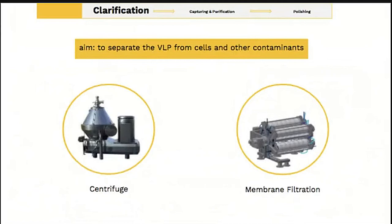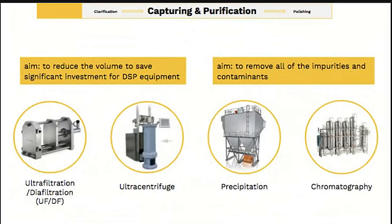The goal of capturing and purification is to reduce the volume, remove impurities for further purification steps, and save significant investment required for the DSP equipment. Capturing can be done through UFDF or ultracentrifugation. However, UFDF is more commonly used in the industry due to scalability issues with ultracentrifugation. While ultracentrifugation gives a higher volumetric concentration factor, it is very costly to scale to an industrial level. Purification can be done through precipitation and chromatography, specifically anion exchange chromatography.